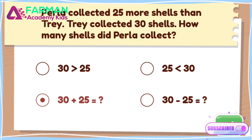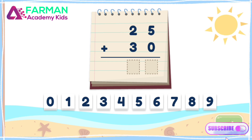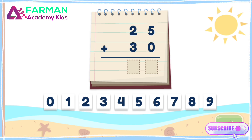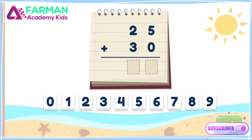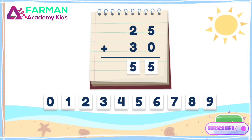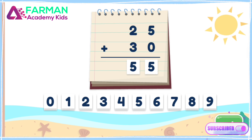30 plus 25 reflects the word problem. How many shells did Perla collect? Drag the numbers to the dotted rectangles to solve the equation. 25 plus 30 equals 55.